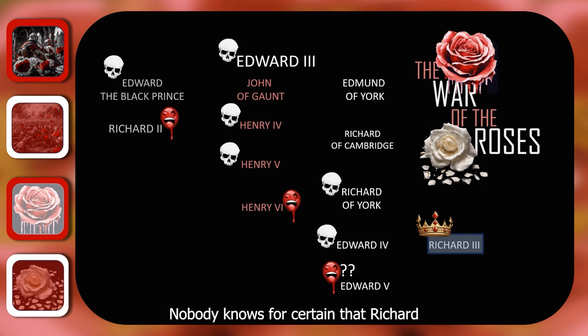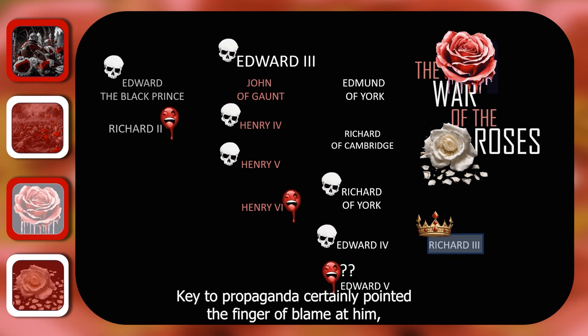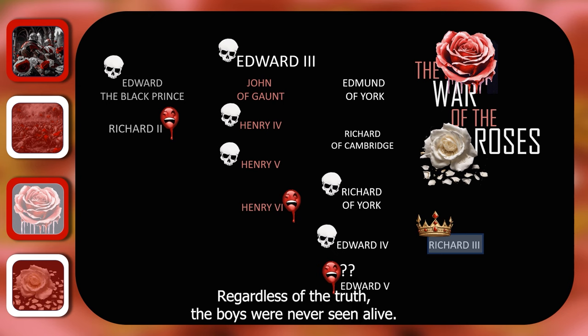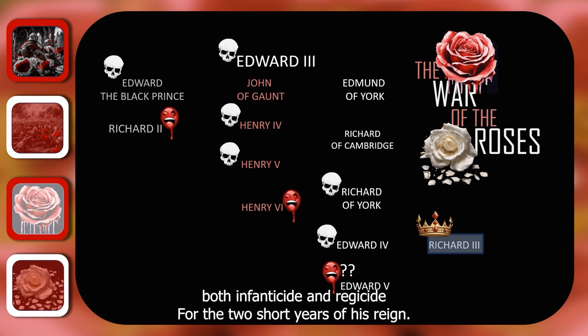Nobody knows for certain that Richard III murdered Edward V and his younger brother Richard. Tudor propaganda certainly pointed the finger of blame at him, and that was used to convince both the English subjects and foreign powers that Henry was justified in his conquest. Regardless of the truth, the boys were never seen alive after the autumn of 1483, and Richard struggled to hold the crown from those who believed he had committed both infanticide and regicide for the two short years of his reign.